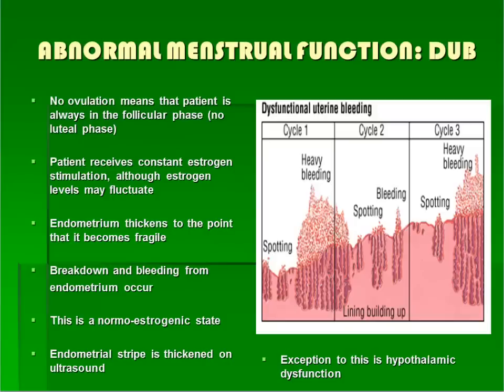If a patient is anovulatory, this means that no egg is released from the ovary mid-cycle. Consequently, no corpus luteum is formed and progesterone is not produced. In most of these patients, estrogen is still being produced by the ovary and the uterine lining continues to thicken in response. The uterine lining becomes thicker and thicker until it outgrows the blood supply and begins to slough, leading to irregular spotting or heavy bleeding. You can see a thickened endometrial stripe on pelvic ultrasound in these patients.